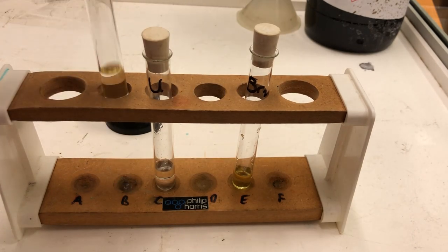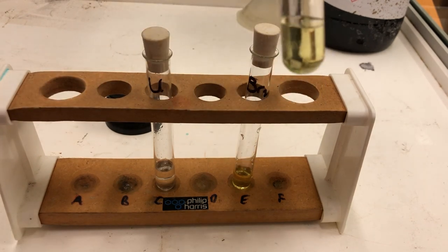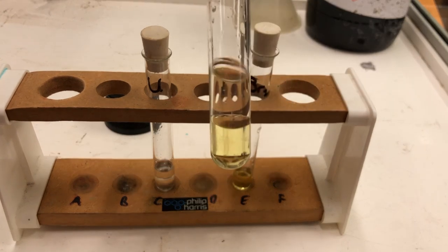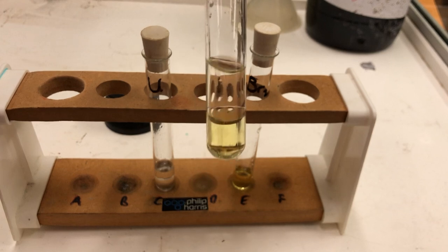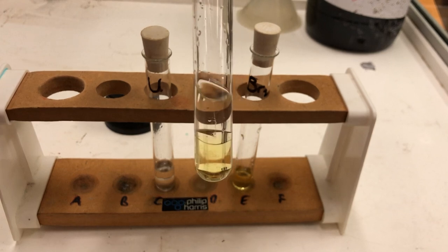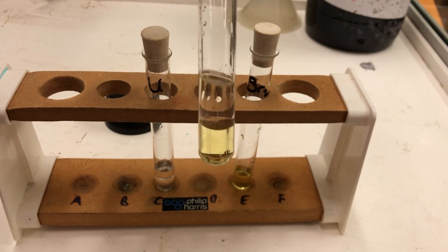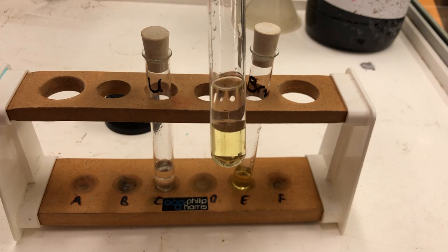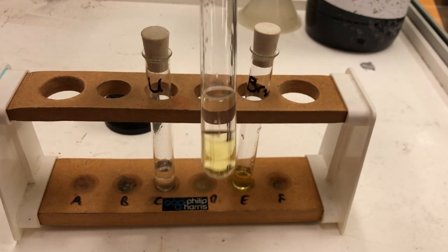When bromine water was added to the hexane, the bromine water is lying at the bottom here and it has remained yellow. There has been no reaction. There's two layers there because the bromine water and the hexane are insoluble. They do not dissolve in each other, but the bromine has not changed. It remains yellow.